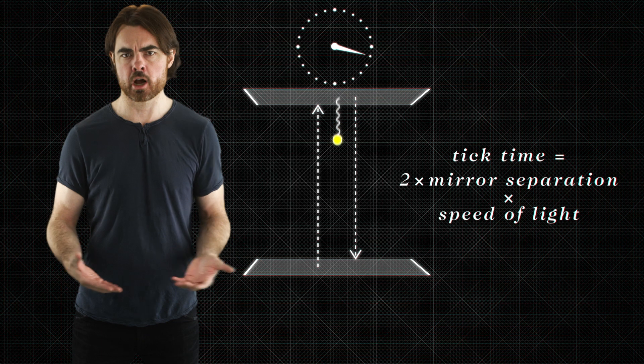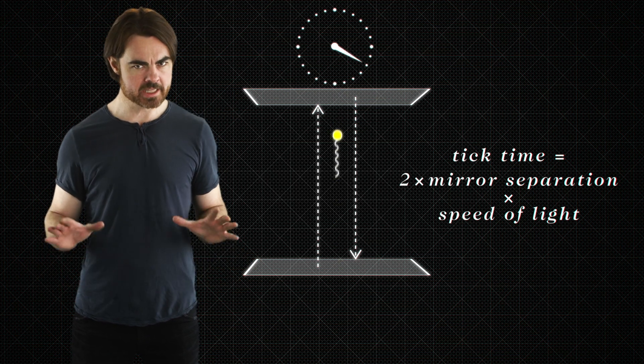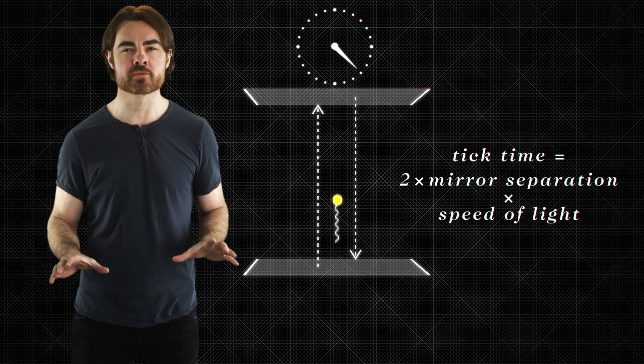Imagine a clock made from two mirrors and a photon bouncing between them. Every back and forth bounce of the photon results in a tick of the clock. The tick rate depends on the speed of light and on the distance that the photon has to travel between the mirrors. The rate of ticks is consistent. Time flows smoothly until the clock starts moving relative to me.